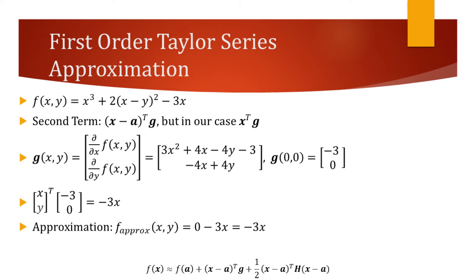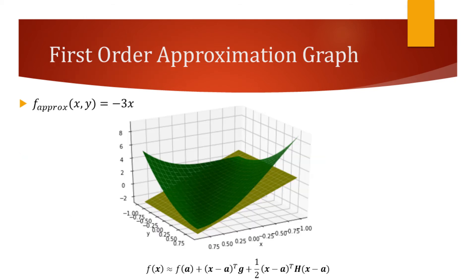Let's now observe how the graph of our approximation has changed. Unlike our previous approximation, this one correctly captures the slope of the original function at the origin.